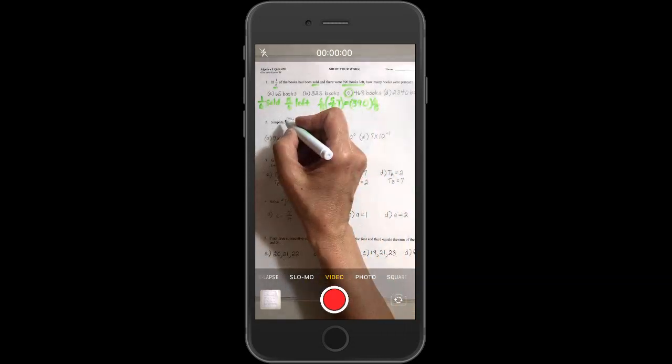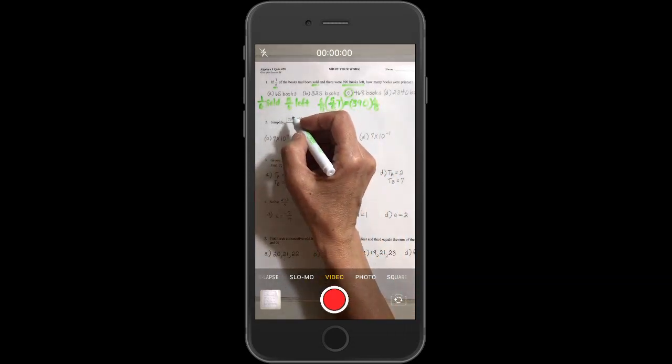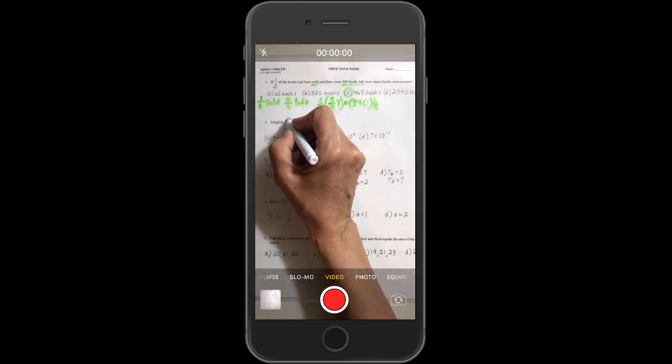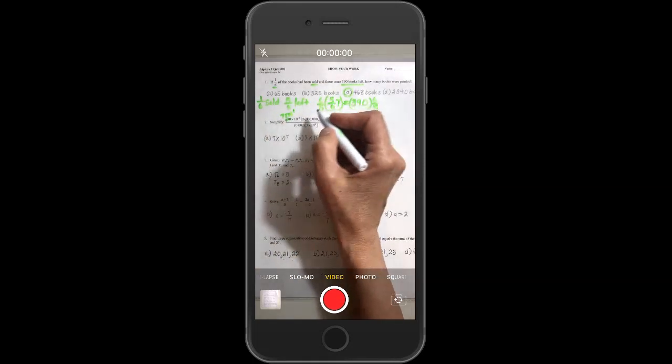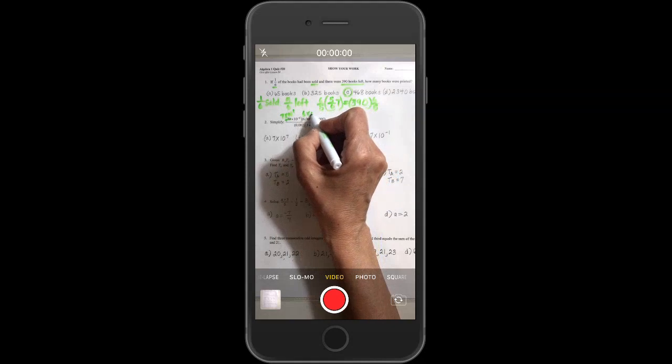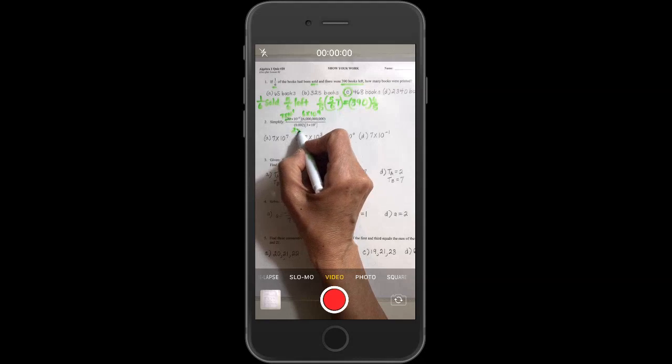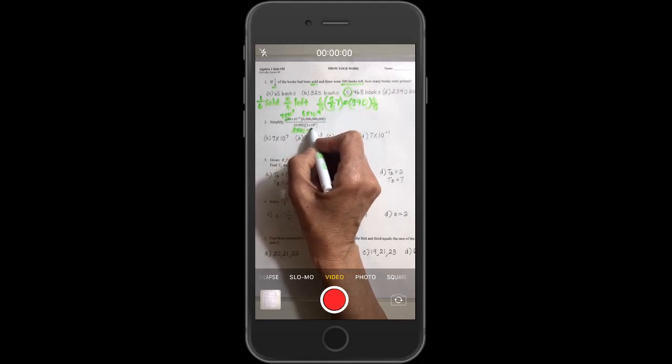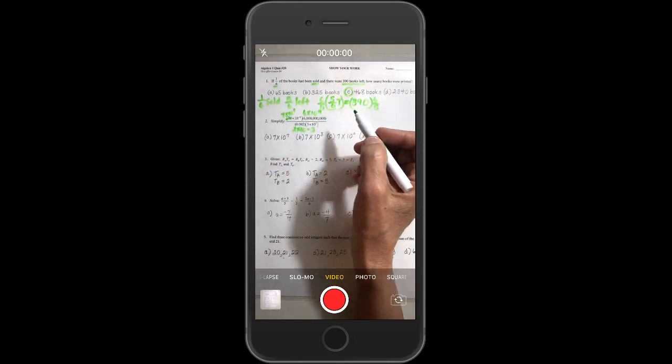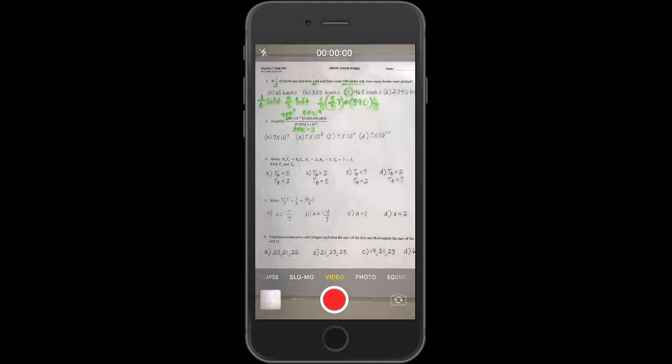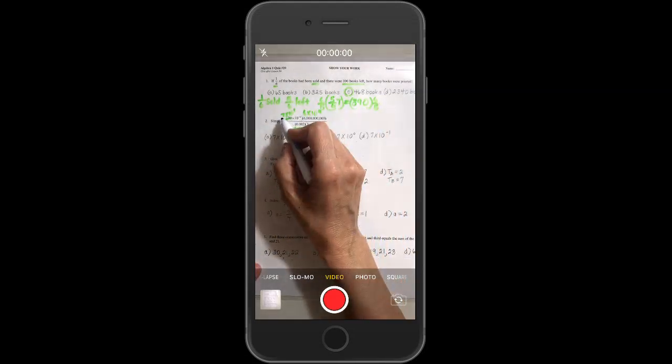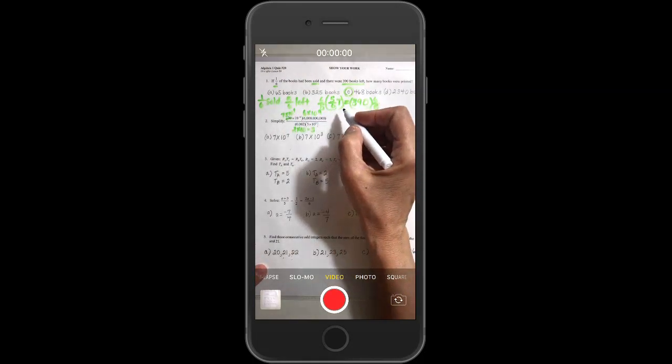On number two, several people missed that. I don't know if you rushed through your conversions or not, but just be careful. Seven times ten to the first and six times ten to the nine. Down here, this is two times ten to the negative three and three times ten to the second.